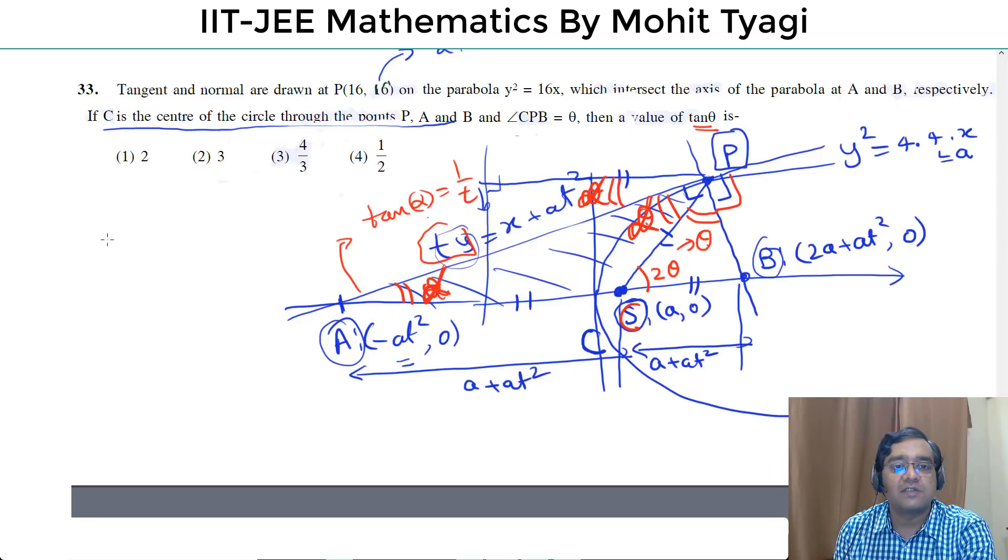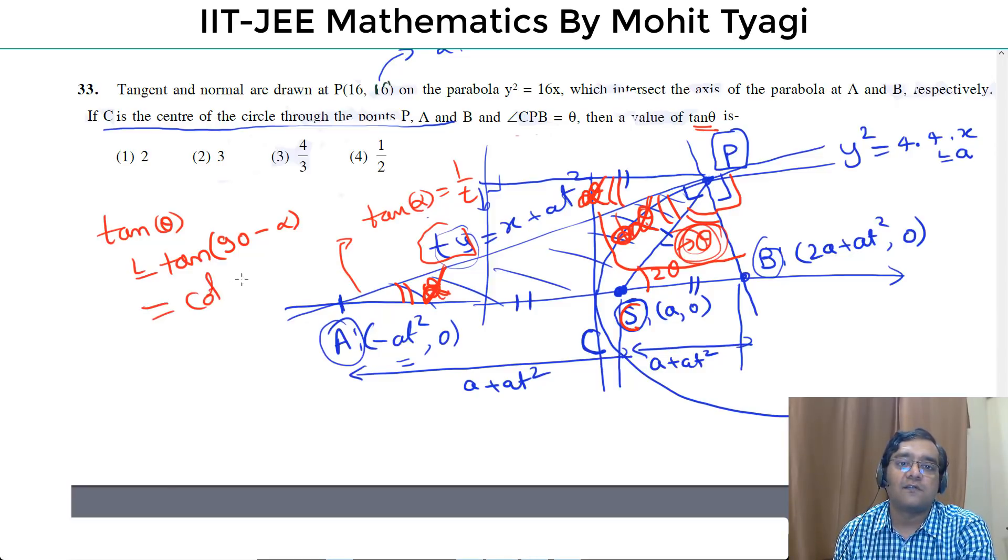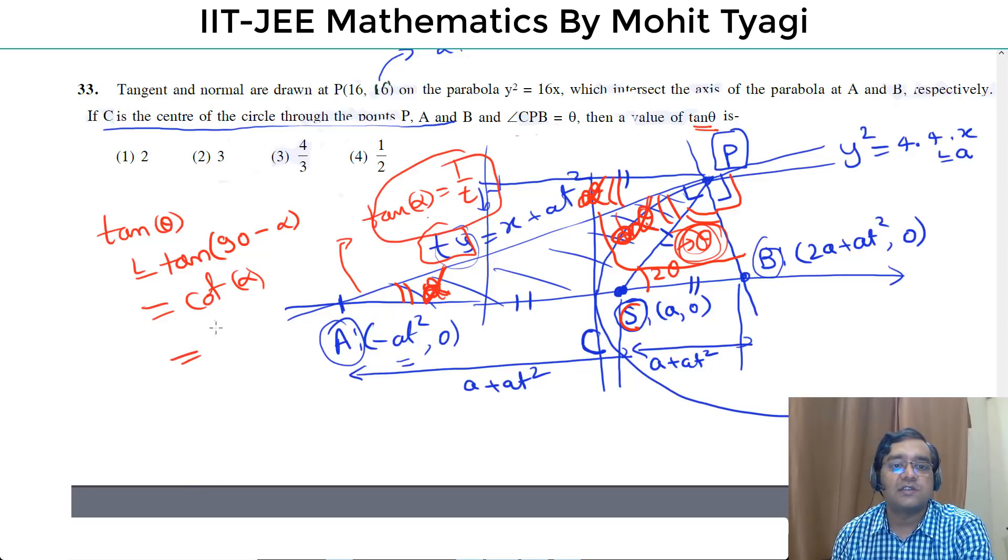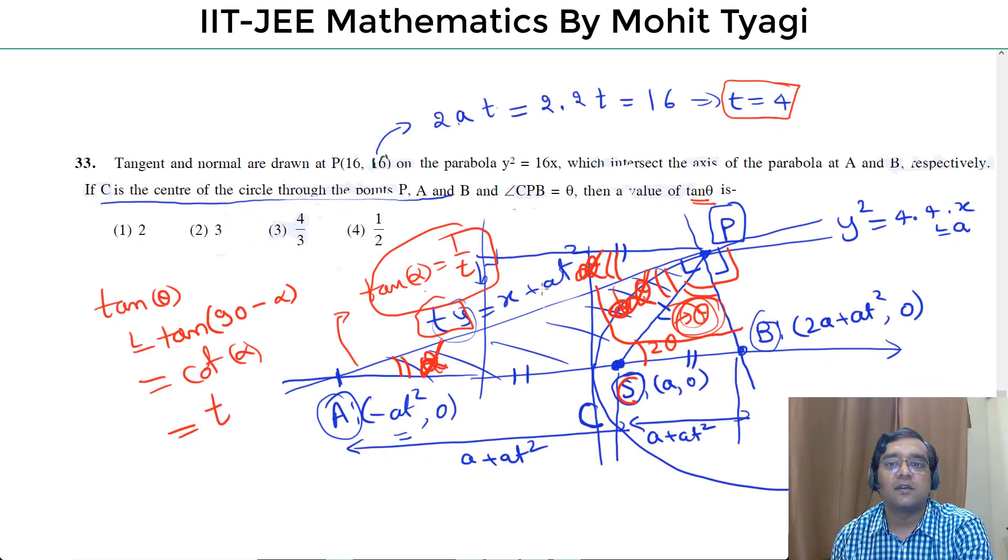That means the strength of theta is the strength of theta. That's tan theta. The same as cot alpha. This is equal to cot alpha. It is complementary. So, this alpha is the strength of theta, which is cot alpha and tan alpha we have 1 over t. So this is t and t value we have now here is equal to 4.